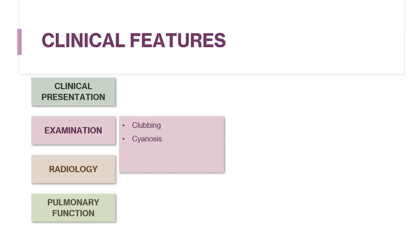Central cyanosis and signs of right heart failure may be noted in advanced disease. On lung auscultation, crackles are audible — these are very typical and are called velcro-type crackles, heard bilaterally on the lung bases. Signs of cor pulmonale may be present, including left parasternal heave, a loud pulmonary component of S2, increased physiological splitting of S2, raised JVP, and peripheral edema.